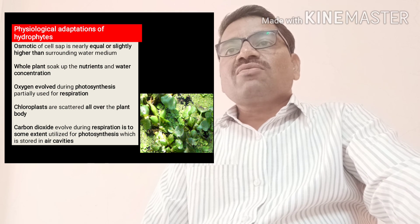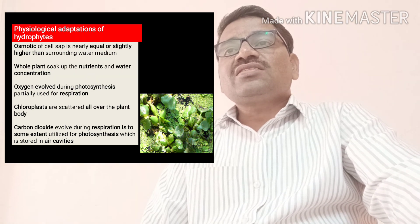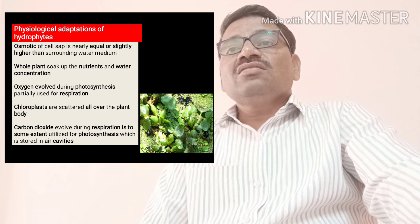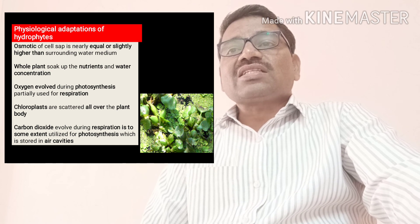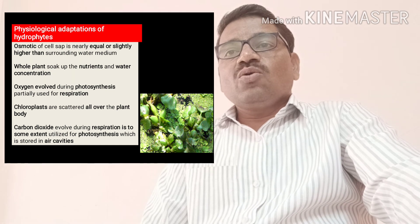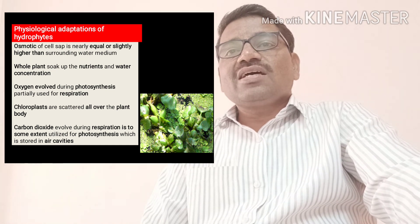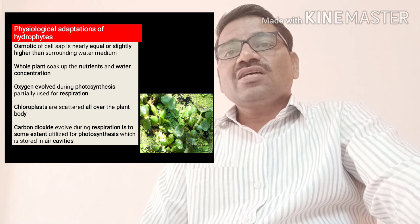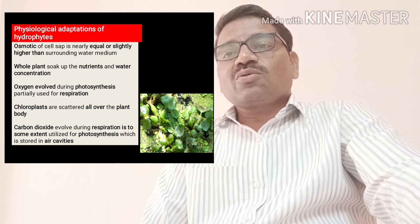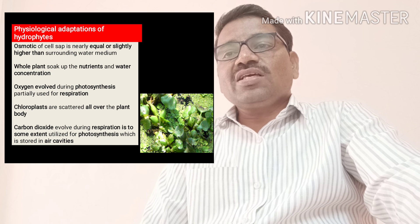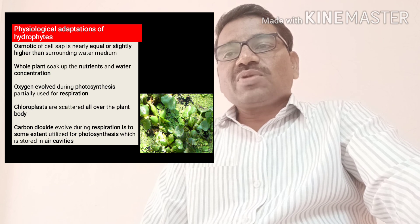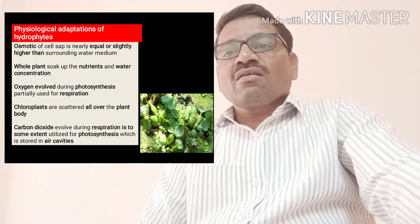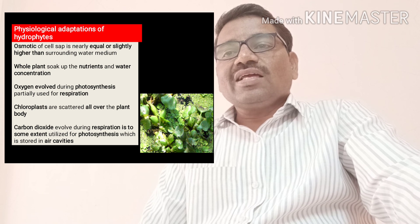After the anatomical adaptations, these hydrophytes show some physiological adaptations. The osmotic pressure of the cell sap is nearly equal to or slightly higher than the surrounding water medium. The whole plant soaks up nutrients and water. The oxygen evolved during photosynthesis is partially used for respiration. The chloroplasts are scattered all over the plant body. Carbon dioxide evolved during respiration is, to some extent, utilized for photosynthesis, which is stored in air cavities.